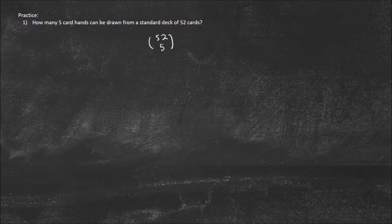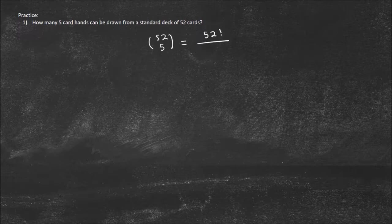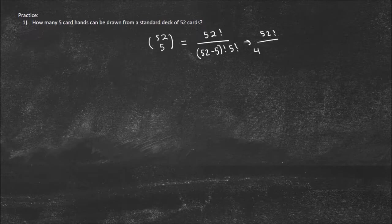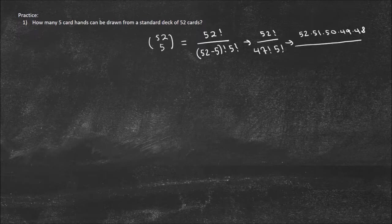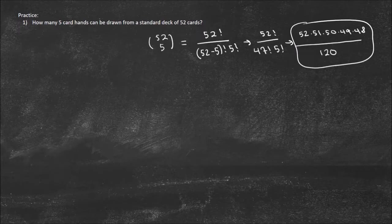So the answer is 52 choose 5. The formula is 52 factorial divided by (52 minus 5) factorial times 5 factorial, which is 52 factorial over 47 factorial times 5 factorial. This simplifies to 52 times 51 times 50 times 49 times 48 — because the 47 factorial cancels — all over 5 factorial, which is 120. That gives us 52 times 51 times 50 times 49 times 48 divided by 120, and that's how many possible five-card hands you can get in poker.